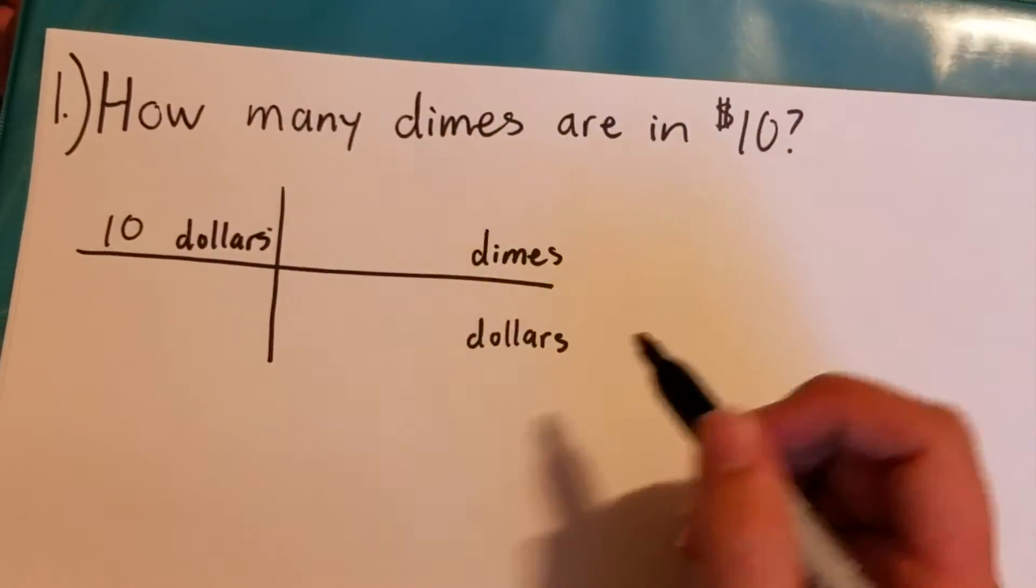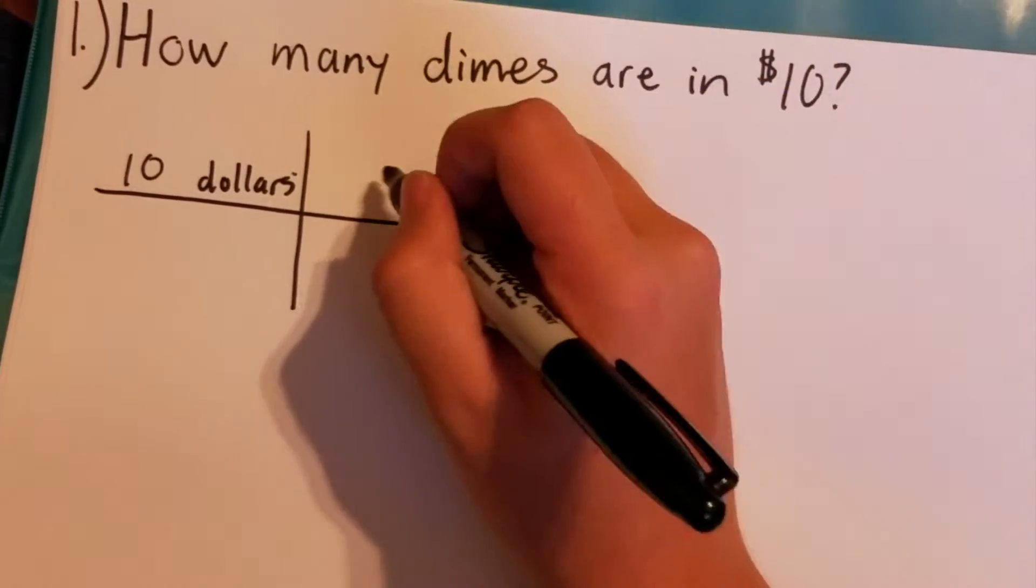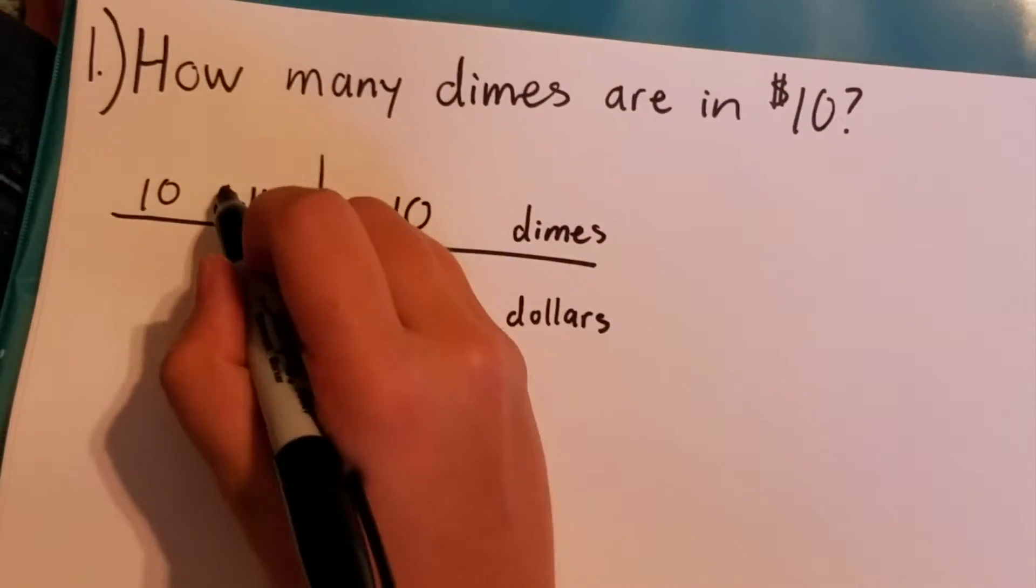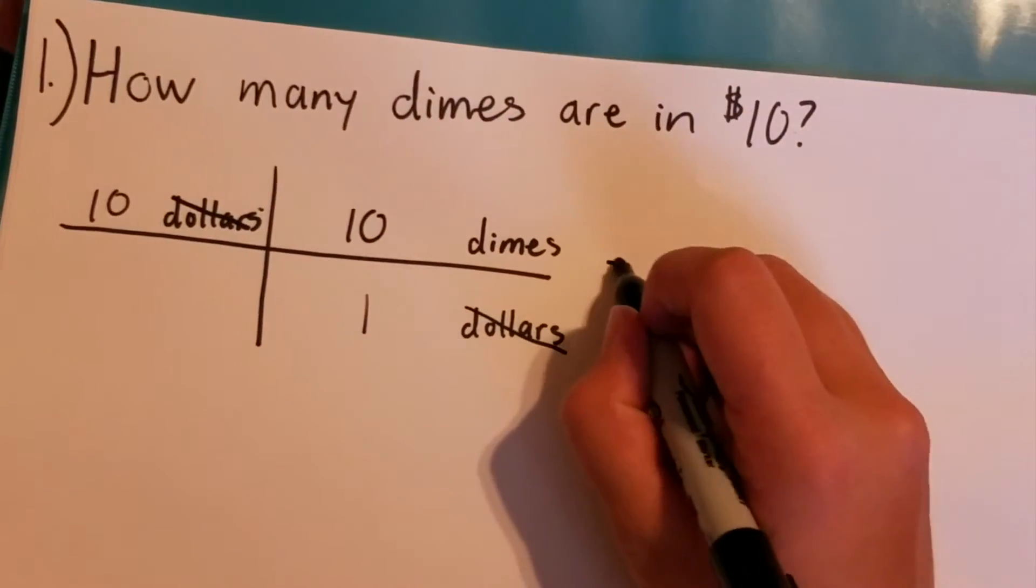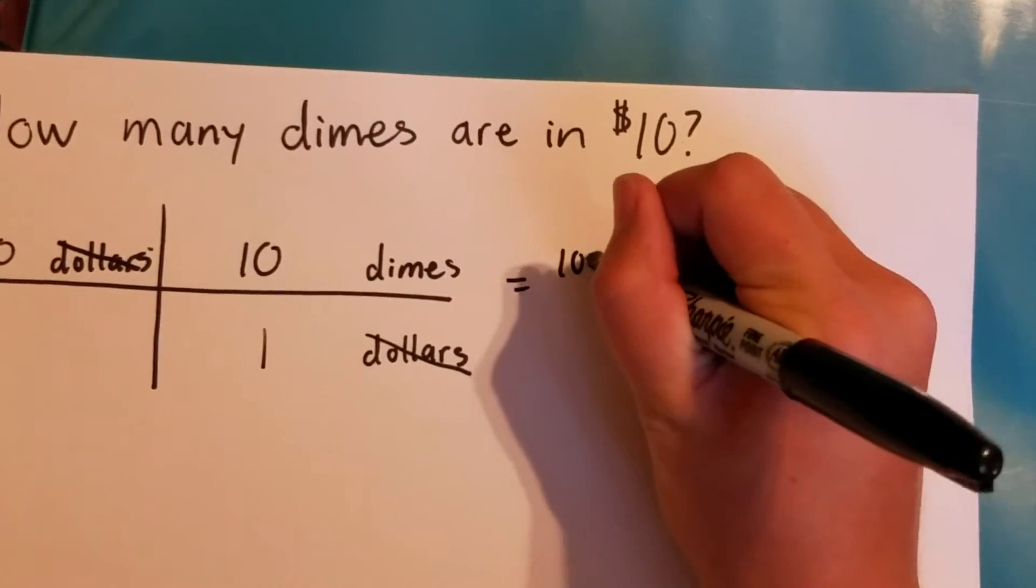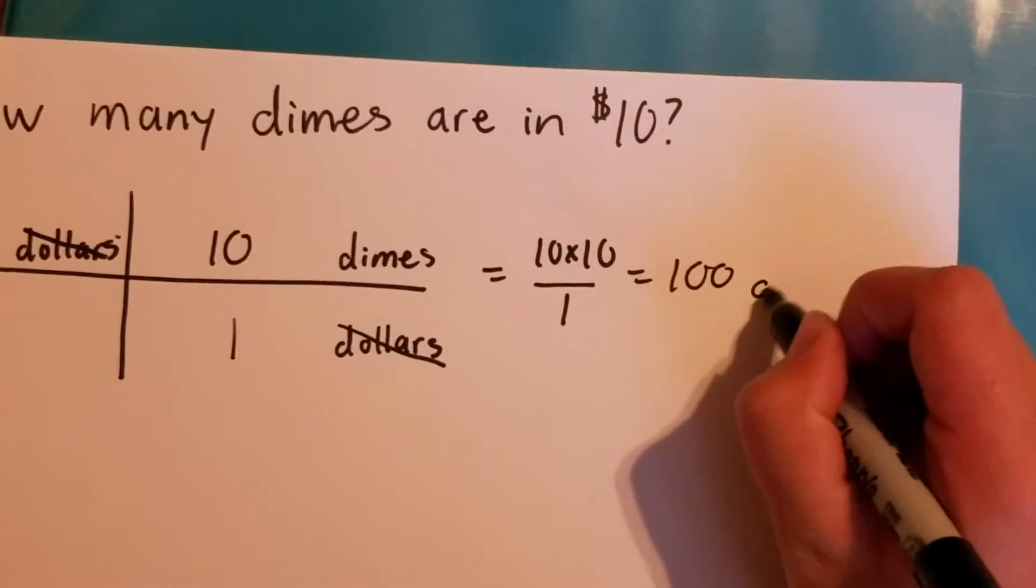I'll write 10 over here and I need to know how many dimes are in $1. So $1 and there's 10 dimes in $1. So then the dollars will cancel. And then you just multiply straight across so 10 times 10 over 1 equals 100 dimes.